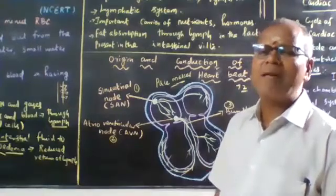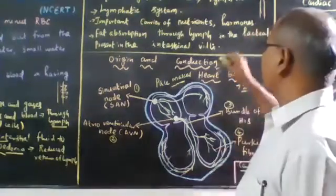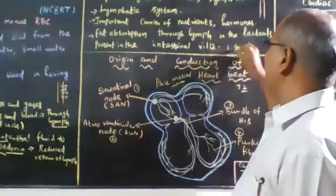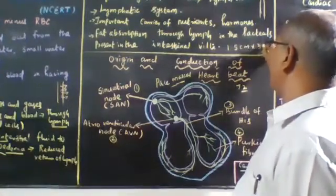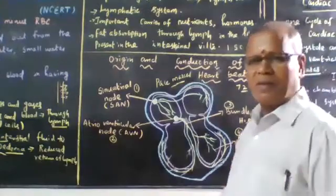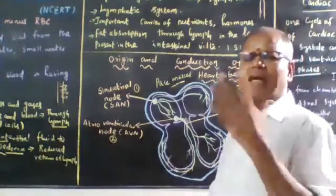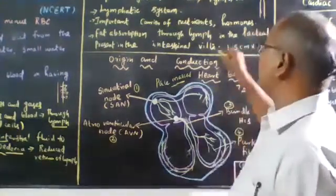The sino-auricular node is 1.5 centimeter into 3 millimeter in diameter. The velocity of conduction is 0.3 meter per second.